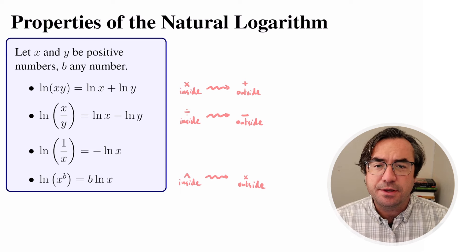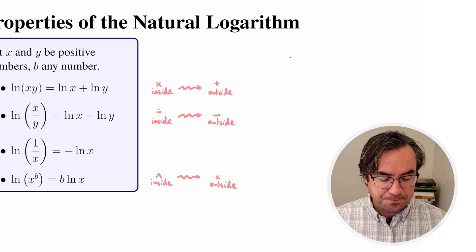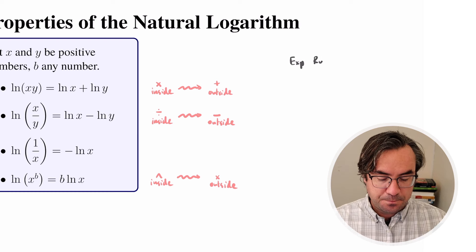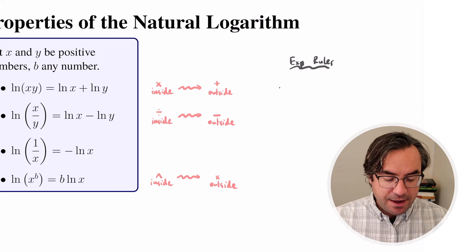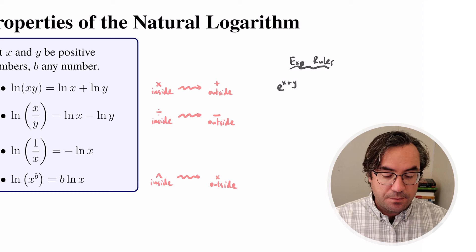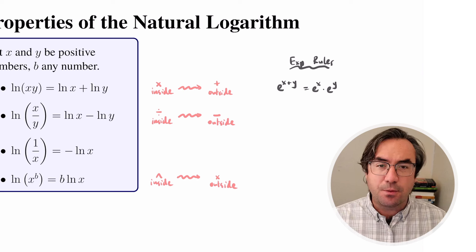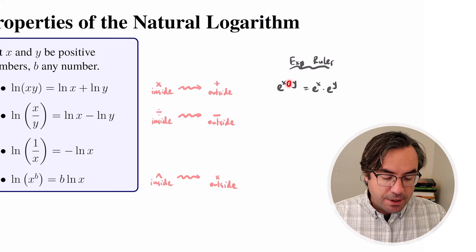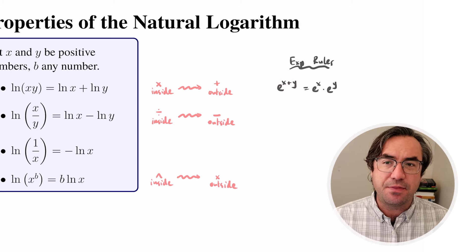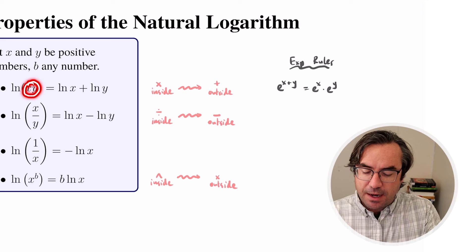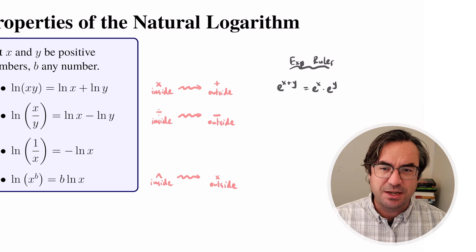So where do these properties come from? Each of them really comes from our exponential rules. The exponential rule related to the first property says that e raised to the x plus y can be broken apart and written as e raised to the x times e raised to the y. We're going from addition inside the exponent to multiplication at the base level — and our log property does the opposite: multiplication inside the log becomes addition of the log functions.